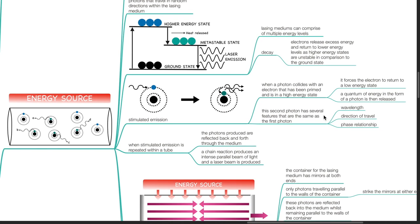Stimulated emission occurs when a photon collides with an electron that has been primed and is in a high energy state. It forces the electron to return to a lower energy state. A quantum of energy in the form of a photon is then released. This second photon has several features that are the same as the first photon. It has the same wavelength, direction of travel and phase relationship.